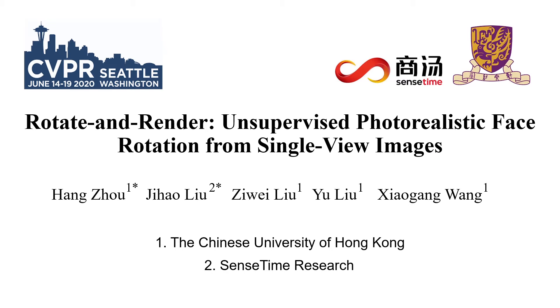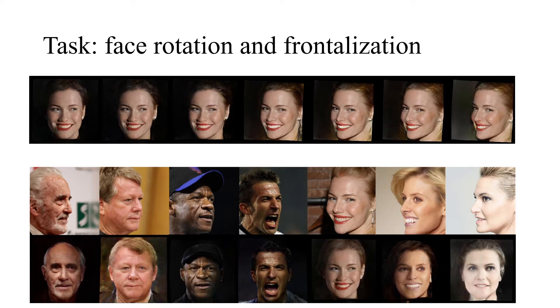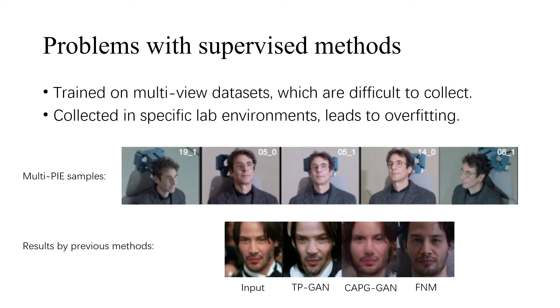We present Rotate and Render, an unsupervised method for realistic face rotation from single-view images. Our method aims at rotating and synthesizing faces without supervision. Previous supervised methods rely on multi-view datasets, which are difficult to collect and can be easily overfitted to.